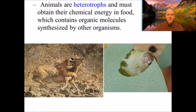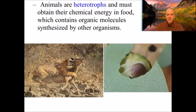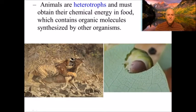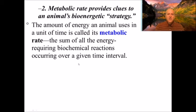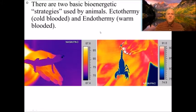The amount of energy an animal uses per unit of time is called its metabolic rate — the sum of all energy-requiring biochemical reactions over a given time interval. This varies hugely across animals, from an elephant to a hummingbird. The two basic bioenergetic strategies used by animals are ectothermy, meaning cold-blooded, and endothermy, meaning warm-blooded.